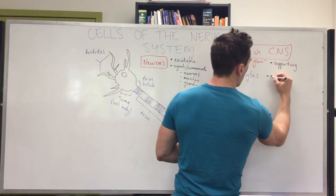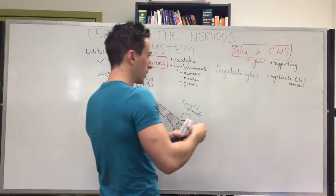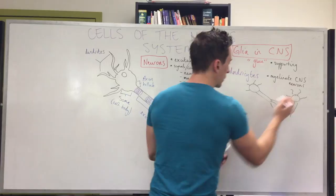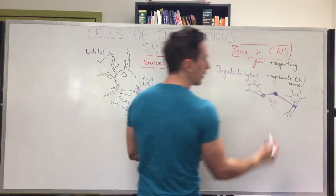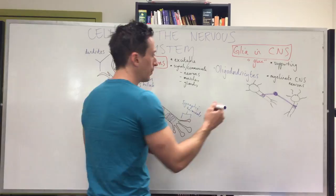Oligodendrocytes myelinate neurons within the central nervous system — that is, the brain, brain stem, and spinal cord. They have these projections or arms that come off and wrap around the axons of neurons. This is how oligodendrocytes protect the axons of neurons in the central nervous system.